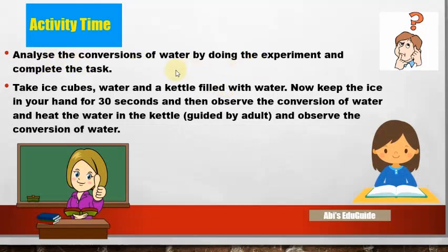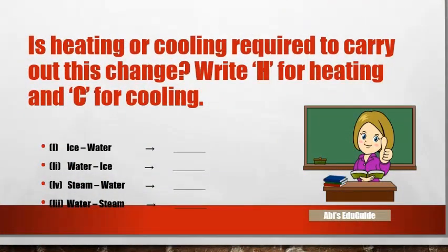Now it's activity time. Analyze the conversions of water by doing an experiment and complete the task. Take ice cubes, water, and a kettle filled with water. Keep the ice in your hand for 30 seconds and observe the conversion. Then heat the water in the kettle, guided by an adult, and observe the conversion. Complete the activity: is heating or cooling required for each change? Use H for heating and C for cooling — ice to water, water to ice, steam to water, water to steam.